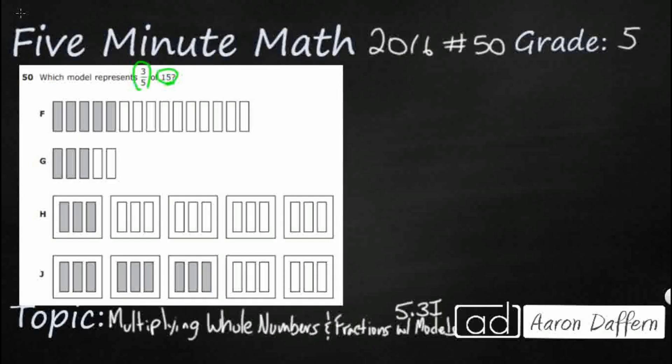There's already one of these models I can go ahead and get rid of. It's the one that kind of sticks out on its own. Take a look at G. G actually does a pretty good job of representing three-fifths, right? You've got your numerator of three out of five total, so three shaded, five total, but there's no 15 anywhere. So we're just going to go ahead and get rid of this one.